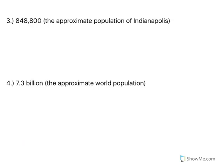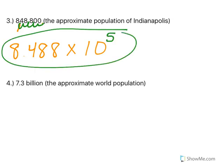In number 3, the population of Indianapolis is 848,800. My decimal point starts here. I want to move it just after that first 8 so that I have 8.488. How many spots did I move it? 1, 2, 3, 4, 5. It's a positive exponent because 848,000 is a large number, bigger than 10.